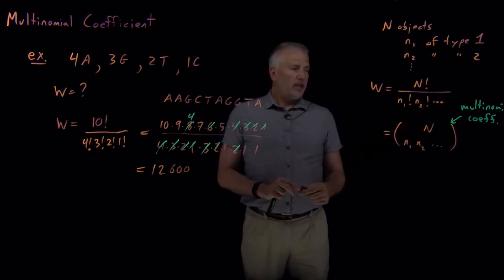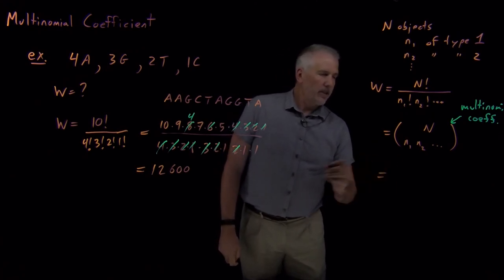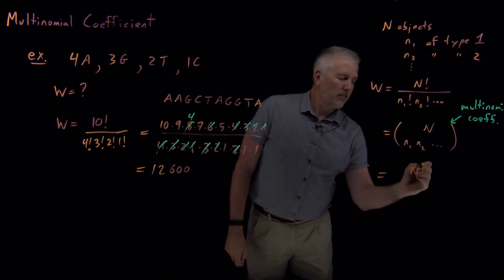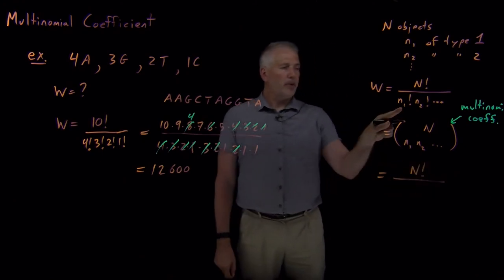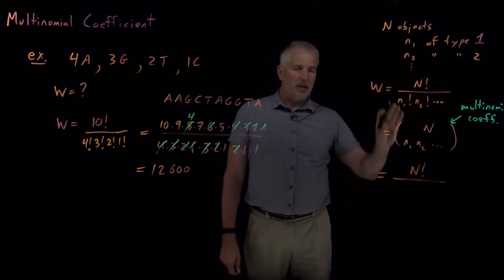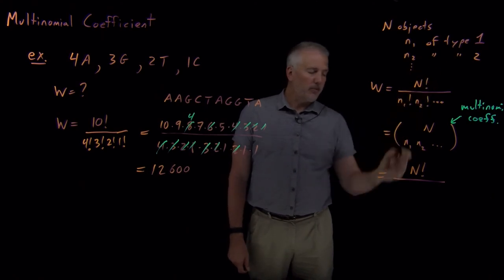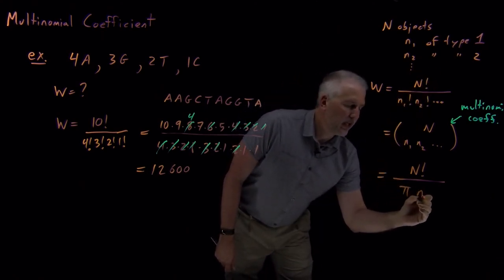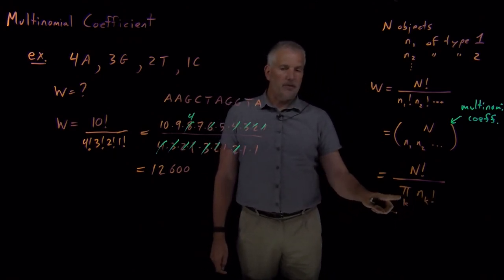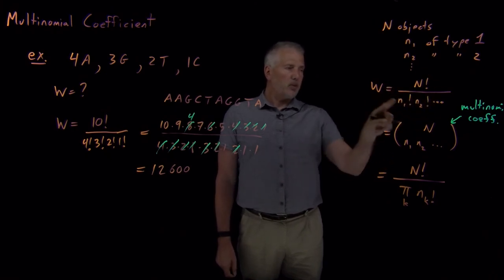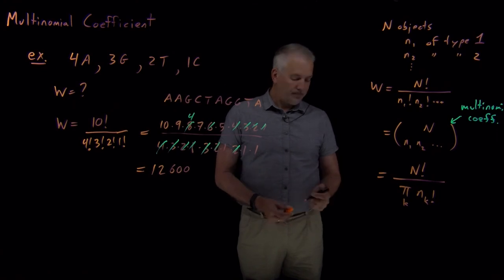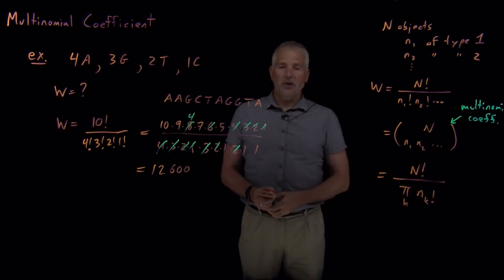If we don't like writing the dot dot dot, another way we can write this is to say that this is n factorial. What we have in the denominator is n1 factorial times n2 factorial, all the way up to some final factorial for our last type of object. So this is the product of n something or other factorial, summing over all the different types of objects k. So if we want a more compact way to write this without the dot dot dot, we can use the product notation to do that. This summarizes the multinomial coefficient.